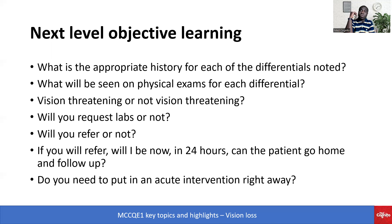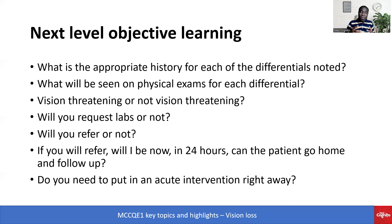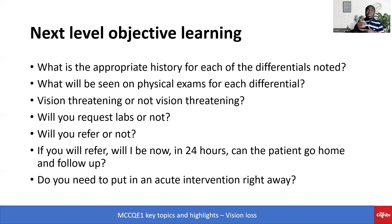For example, take acute angle closure glaucoma. The patient presents with sudden vision loss. You won't need labs, but one key investigation is tonometry of the eye using a tonal pen. Will you refer now or in 24 hours? You refer right now. And do you need acute intervention? Yes — medications like Timolol and Mannitol need to be given.